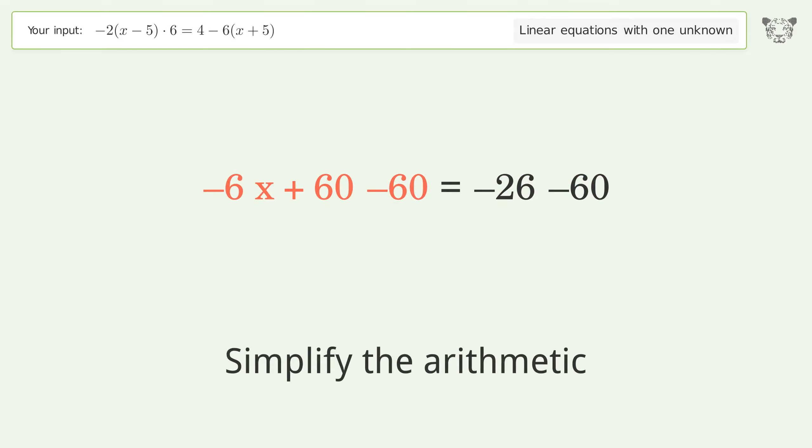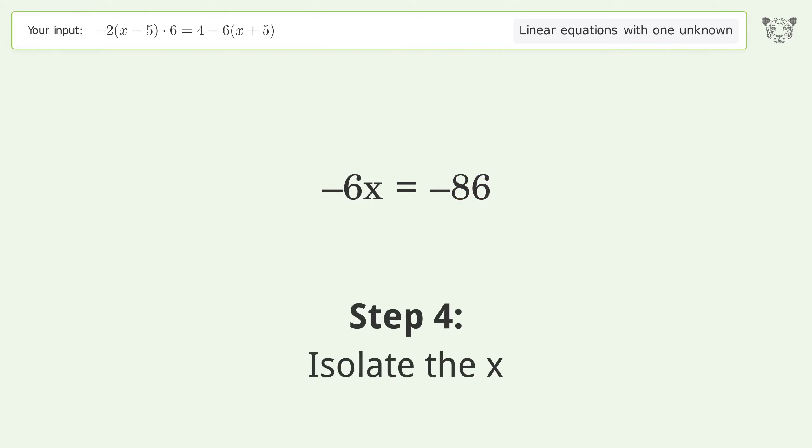Simplify the arithmetic. Group like terms. Isolate the x. Divide both sides by negative 6.